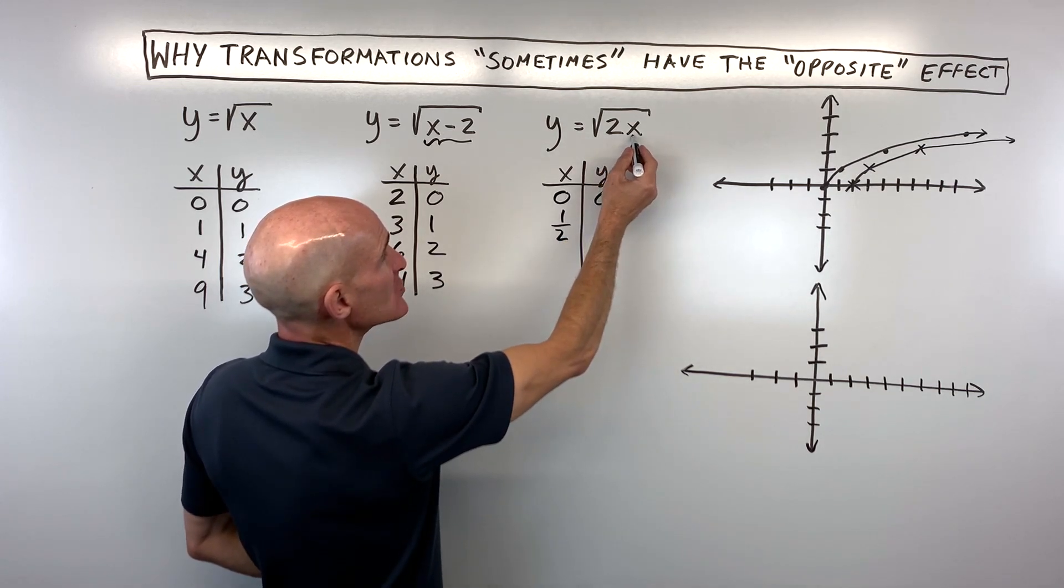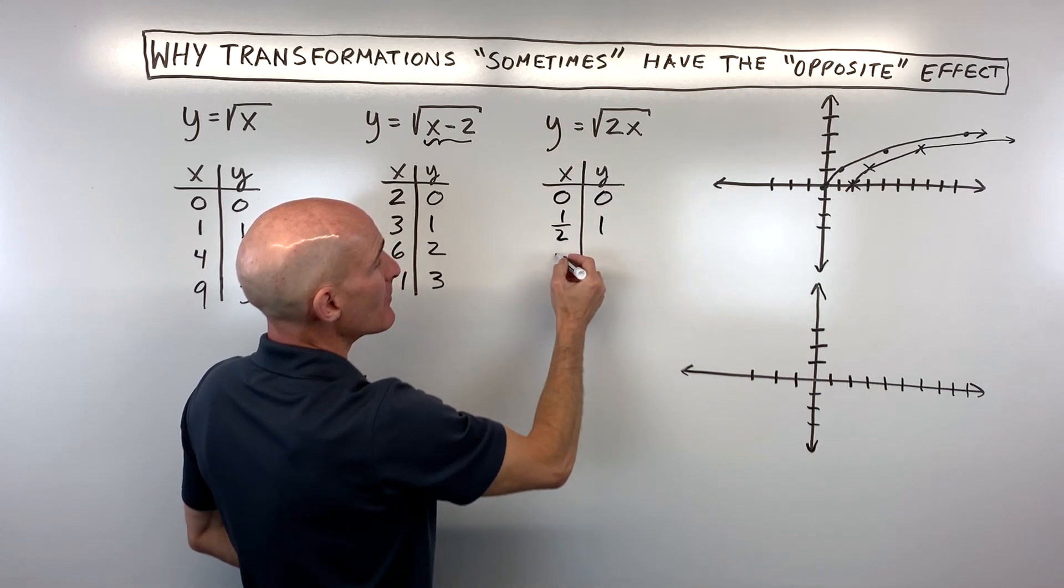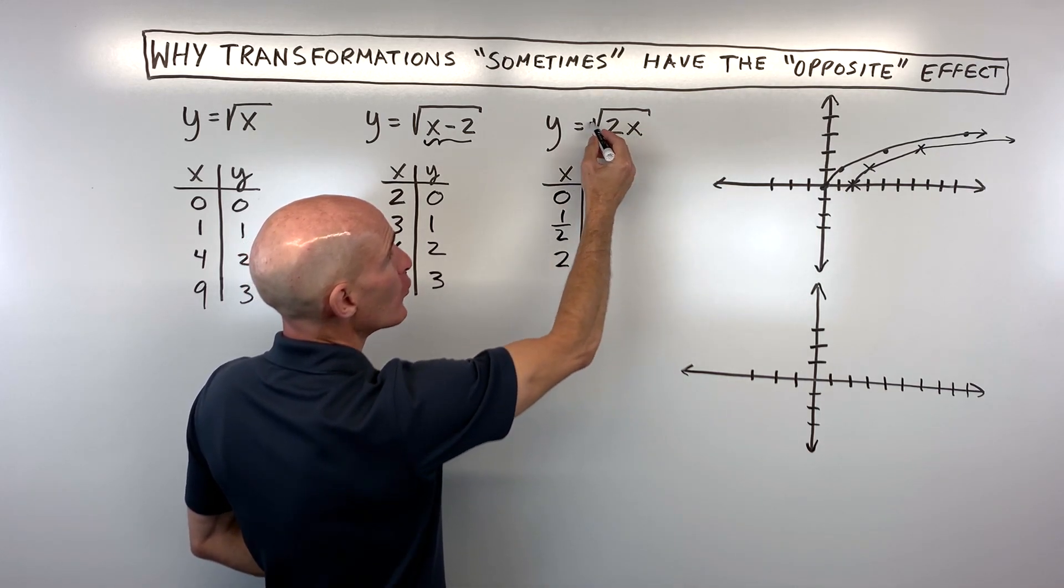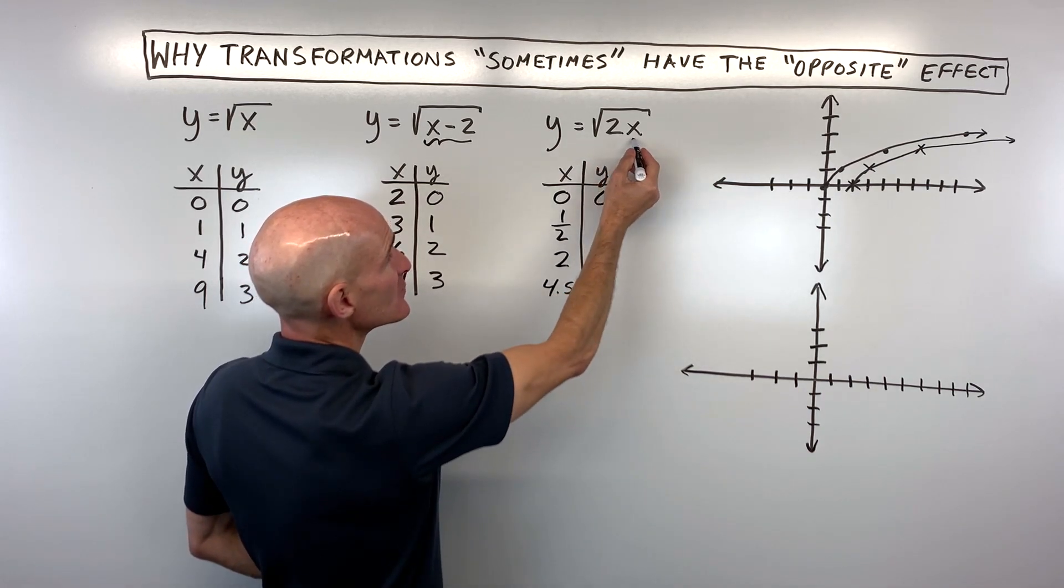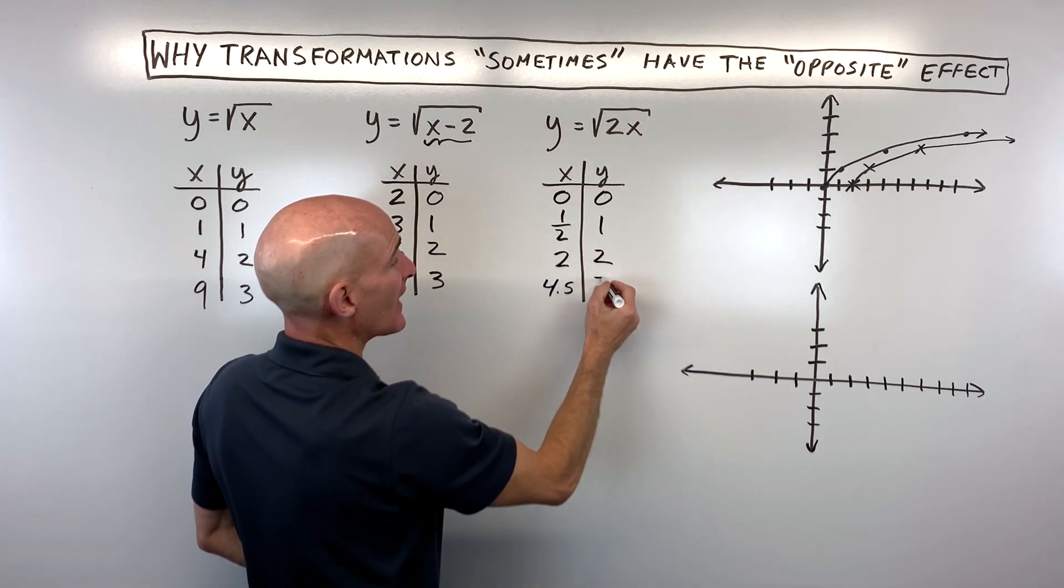If I put in 2, 2 times 2 is 4, and the square root of 4 is 2. And if I put in 4.5, 2 times 4.5 is 9, and the square root of 9 is 3.